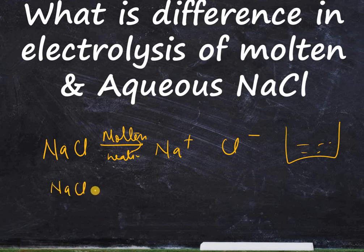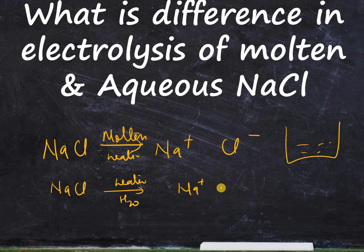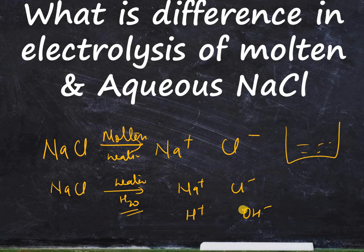You can also separate the ions with water. When you add H2O, you get Na+, Cl-, and also H+ and OH- ions during hydrolysis. This is the major difference — when you understand what is different about the solution, you will understand why the products of electrolysis are not going to be the same.